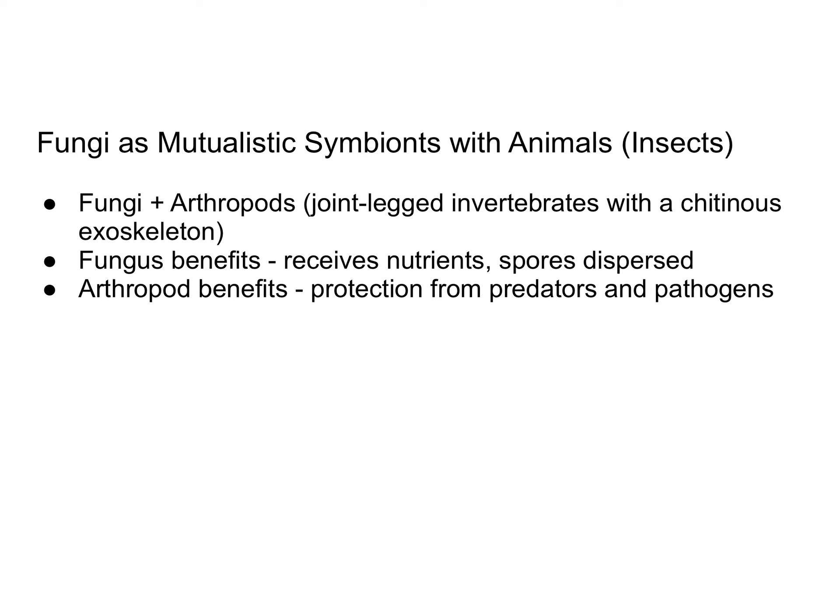Fungi can also form mutualistic relationships with animals, most specifically insects. Fungi and arthropods — arthropods being joint-legged invertebrates with a chitinous exoskeleton — have a mutualistic relationship where both benefit. The fungus receives nutrients from the insect and also catches a ride, gaining access to resources by moving around in the environment rather than being stuck in one place. The arthropod benefits by getting protection from predators and pathogens, which may be due to the fungus creating toxins, tasting bad, or releasing antimicrobial compounds.